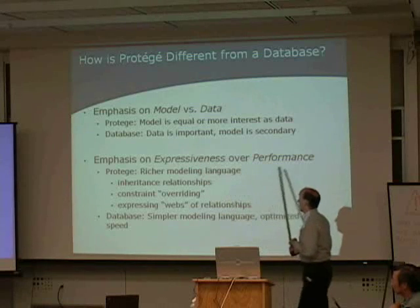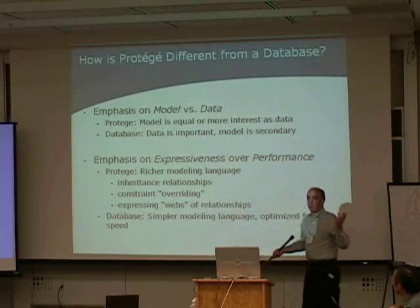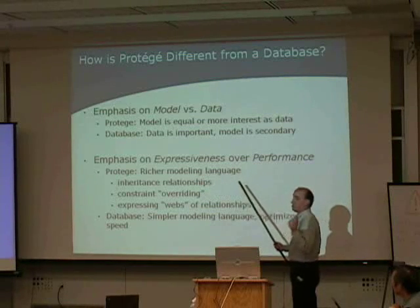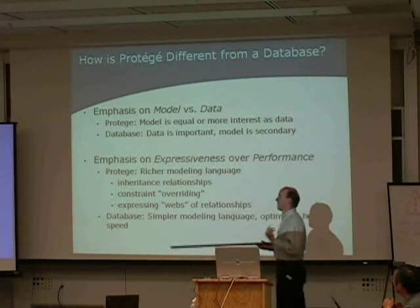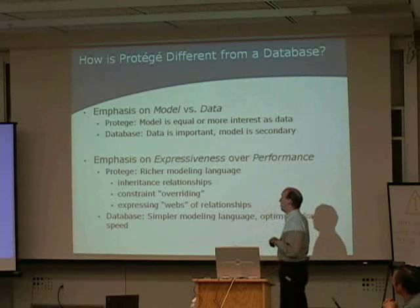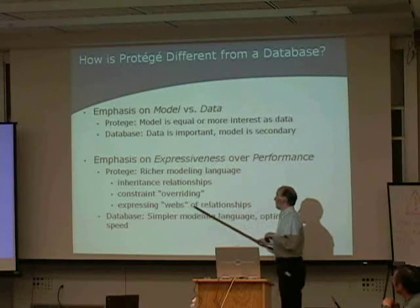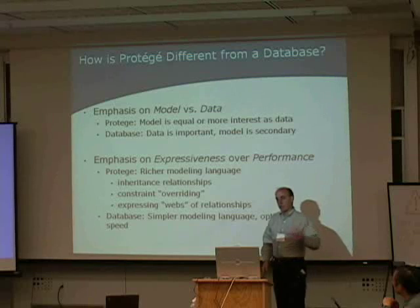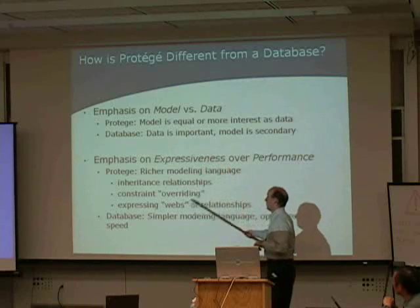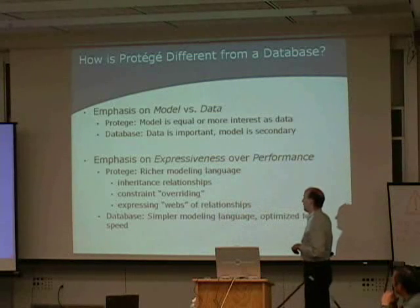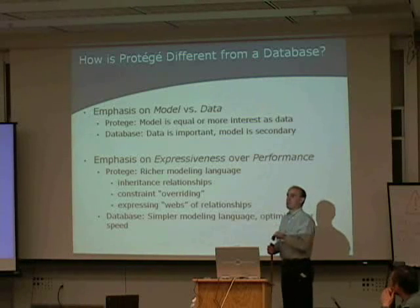There's a trade-off on expressiveness over performance. Protégé, or most knowledge representation languages, has a somewhat richer modeling language. It's actually closer to an object-oriented database — richer than most object-oriented databases. Things like inheritance and multiple inheritance, constraint overriding, and webs of relationships — for example, this person is related to that person, who is related to this other person. That sort of network relationship is very common in Protégé. A particularly bad example of something you would not want to model in Protégé is a newspaper example.